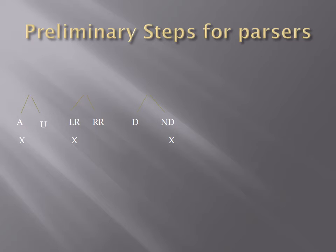For a parser, what we need is unambiguous grammar and right recursion. What we do not need for a parser is ambiguous grammar, left recursion, and non-deterministic productions.